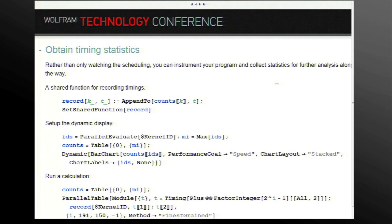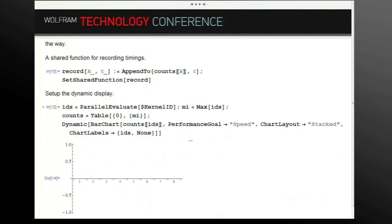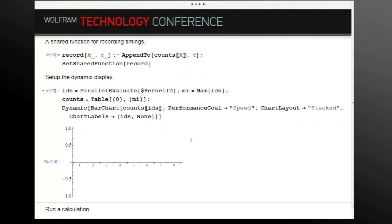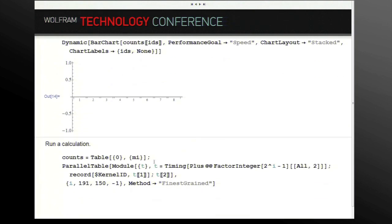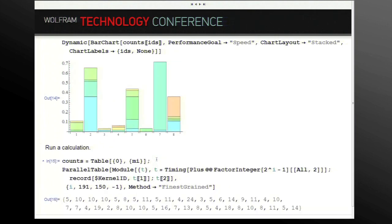Now you can also obtain the measurements. You cannot just look at the picture as you go along, but you can collect the timing statistics. I define a shared function that will create a callback so that whenever an evaluation is finished, the remote kernel tells the master kernel how long it took and collects all those timings. I'll set up a dynamic display as a bar chart of these timings. Now of course it's empty, and as I now do my computation, it will show you the results, the time for each evaluation as it goes along.